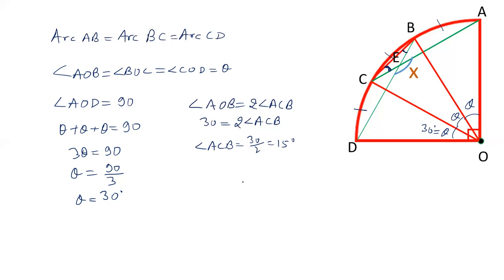Similarly, angle CBE is half of angle COD. The reason is the same: the angle subtended by the arc at the center is twice the angle subtended by the arc at the circle. So half of COD, which is 30 degrees, gives us 15 degrees. Angle CBE is 15 degrees.